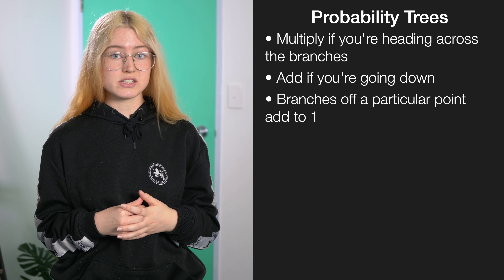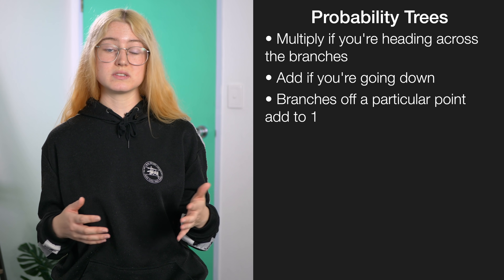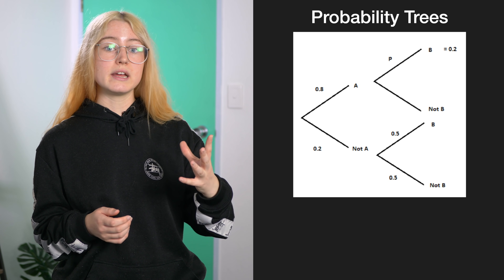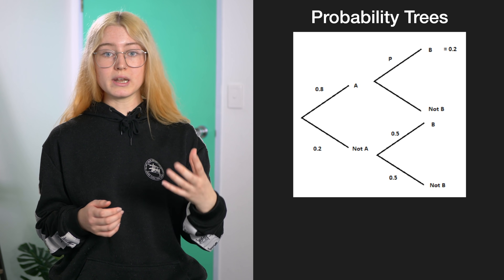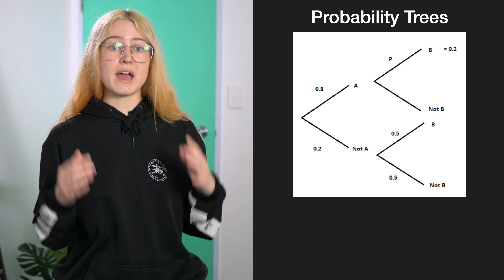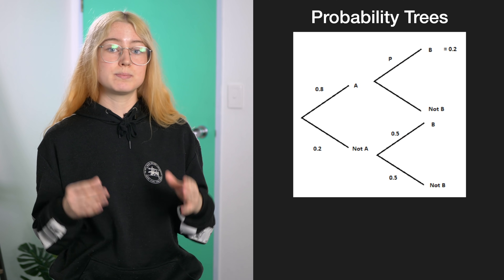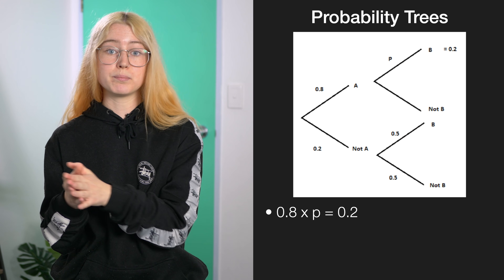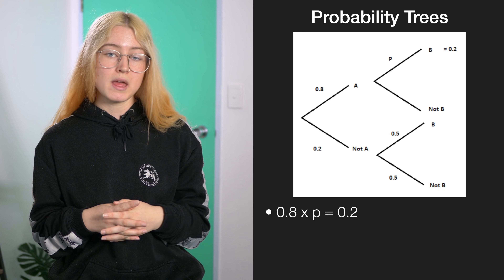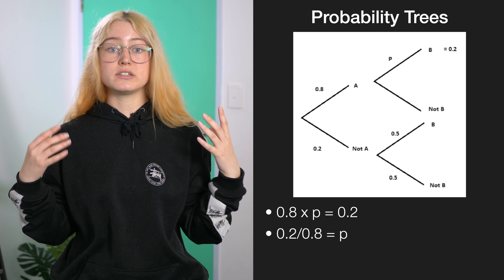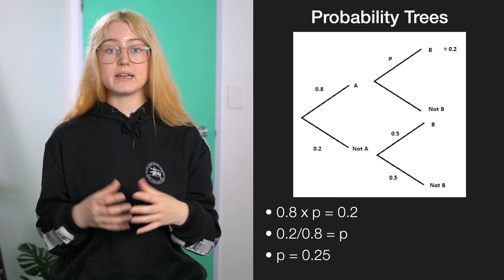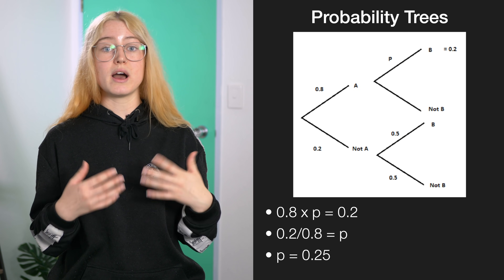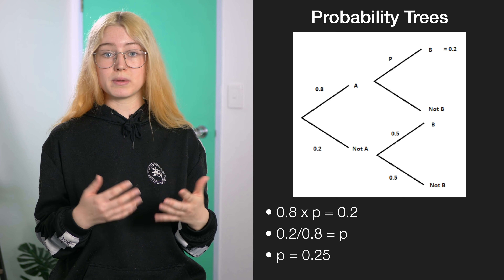Quite often in this standard we're going to have to be working backwards. For example, if the probability of A is 0.8 and the probability of A and B is 0.2, we need to find the probability of event B. We can rearrange and divide to get P equals 0.25, which is our unknown probability of B.